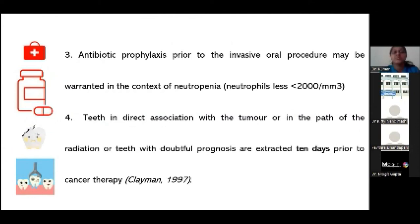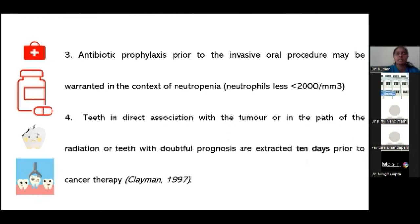When invasive treatment such as extraction is planned, antibiotic prophylaxis is recommended because the patient will be immunosuppressed with neutropenia and susceptible to infection. Teeth requiring extraction include those in line of the tumor, those with doubtful or poor prognosis, or teeth directly in the radiation field that might cause problems during treatment. Tooth extraction is strictly avoided as much as possible during radiotherapy.